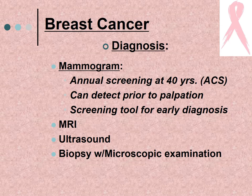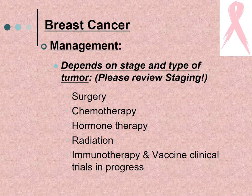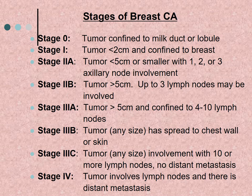Breast cancer diagnosis is made with a mammogram. The American Cancer Society recommends annual mammograms starting at age 40. A mammogram can detect a tumor prior to being palpable. MRIs, ultrasounds, and biopsy with microscopic examination are also used. Management options include surgery, chemotherapy, hormone therapy, radiation, immunotherapy, and vaccine clinical trials — depending on the stage and type of tumor.